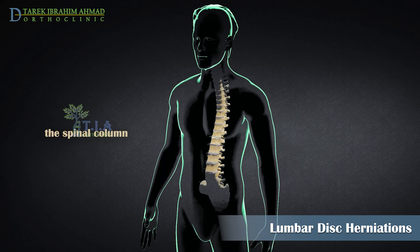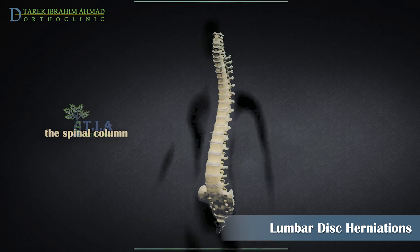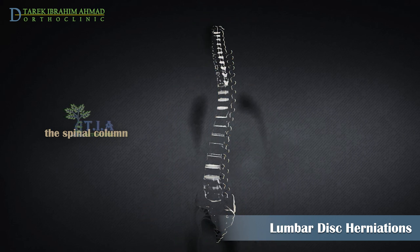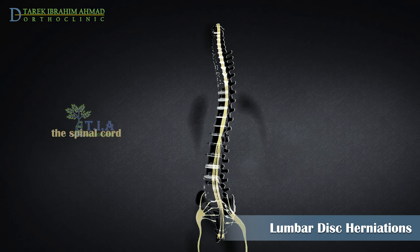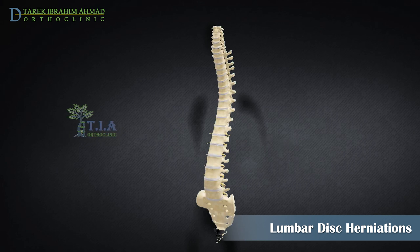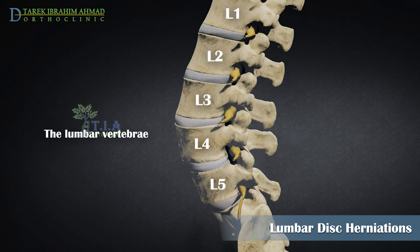At the center is the spinal column, which not only supports the upper body's weight but houses and protects the spinal cord. Stacked on top of one another are about 33 bones — the vertebrae — that form the spinal column. Five lumbar vertebrae, labeled L1 to L5, are known as the lower back.